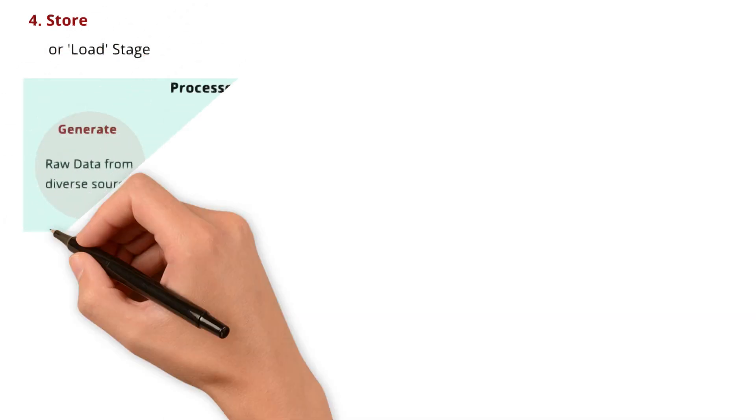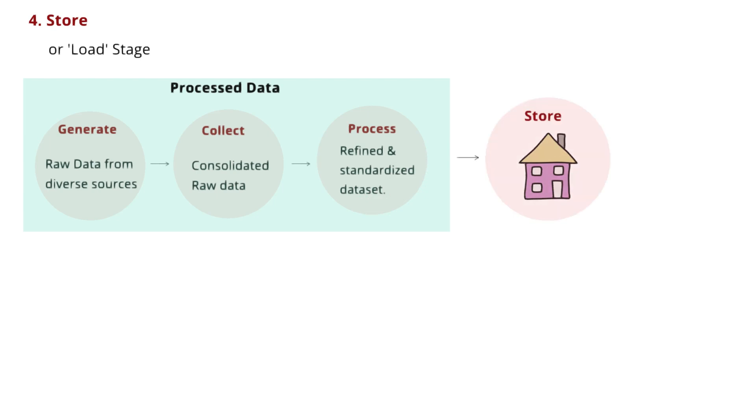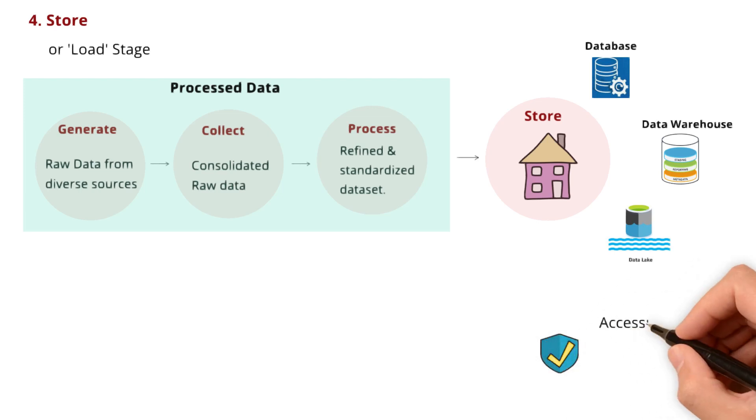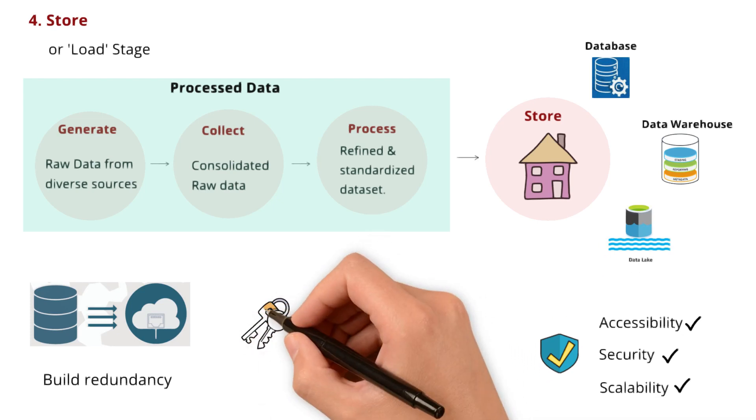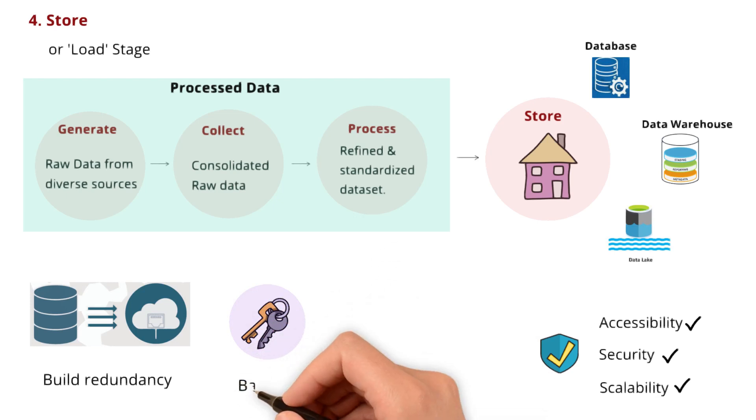Now, let's talk about the stage: store. This is also known as load stage. Processed data needs a home, and that's where storage comes into the picture. Whether it's a traditional database, a data warehouse, or a data lake, selecting the right storage solution is crucial for accessibility, security, and scalability. When determining how to best store data for your organization, it's important to build in a certain level of redundancy to ensure that a copy of your data will be protected and accessible, even if the source becomes corrupted. Let's make it simple. Think of it as having a spare key to your house. This ensures that even if the source gets compromised, we always have a backup that is readily accessible. That is exactly what we are doing, even when it comes to data: creating the redundancy or backup for data.